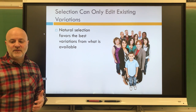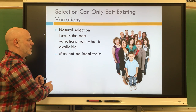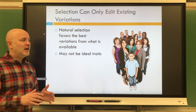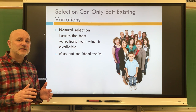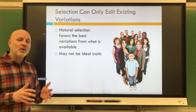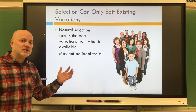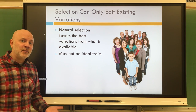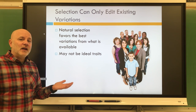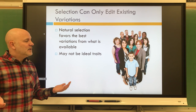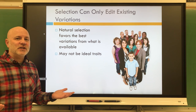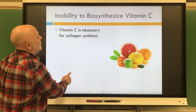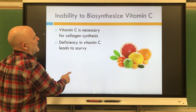Lastly, selection can only edit existing variations. Natural selection is going to favor the best variations from what is available — these may not be ideal traits. I don't have to be the fastest if a bear comes out of the woods and chases our entire class; I just have to be faster than the slowest person to survive and pass on those traits.